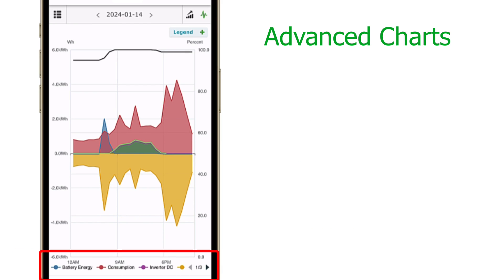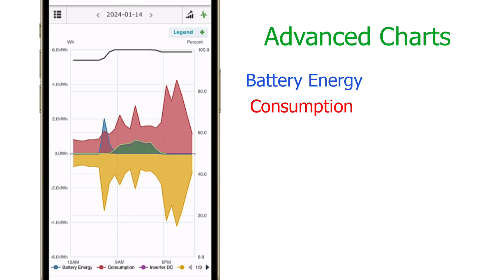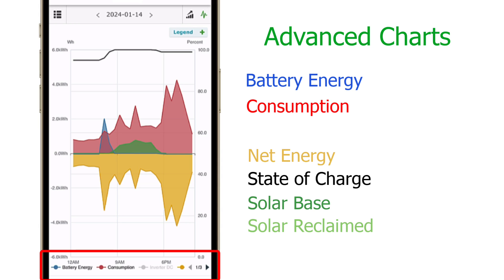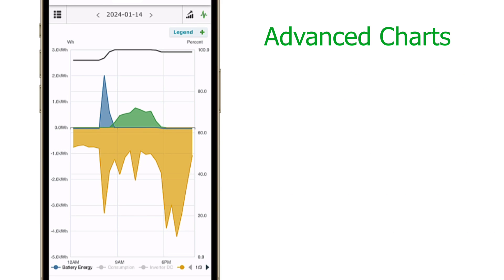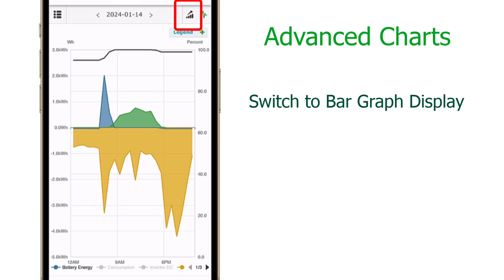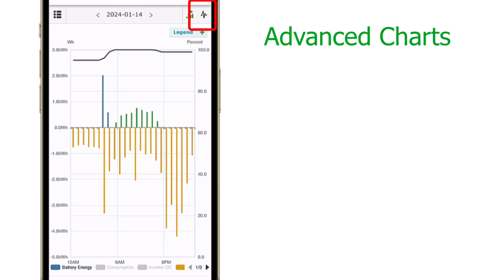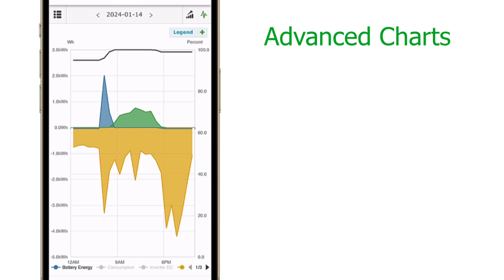Below the chart area is the layer selection, which shows the same information points as the legend, but you can tap each layer to remove it from the graph — tap it again to show the data. In this example, we will remove the inverter DC and the consumption layers from the graph. If you prefer to display the data as bar graphs, tap the bar graph icon in the upper right corner. Tap the heartbeat icon to go back to the default display.